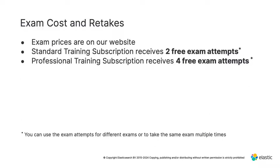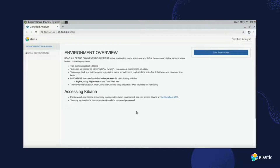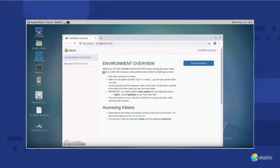Exam prices are available on the website. If you do not pass, you will need to pay to take the exam again. If you have a standard training subscription, you receive two free exam attempts. If you have a professional training subscription, you receive four free exam attempts. These free attempts can be used for different exams or multiple tries on the same exam. When you first open the exam environment, the browser will take up the whole screen and you will see the initial instructions and a 'Start Assessment' button. You can minimize the browser to see your desktop, but the exam instructions are not accessible yet.